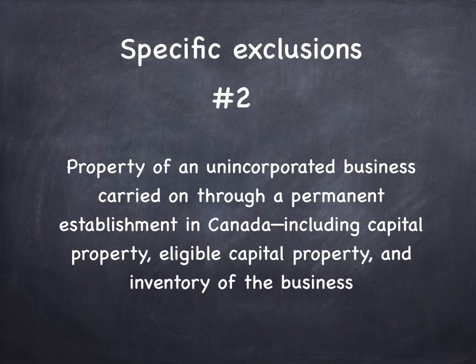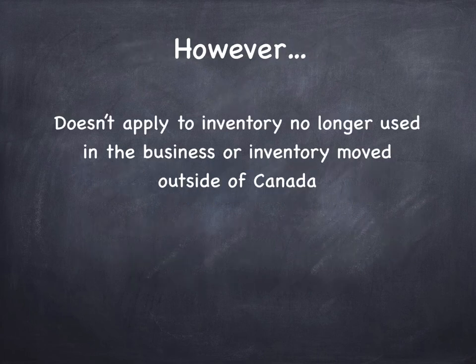Number two: if you run an unincorporated business in Canada, maybe a sole proprietorship carried on through a permanent establishment in Canada, your capital property, eligible capital property, and the inventory of your business will all be excluded. You can't game the system though — the exclusion doesn't apply to inventory you're no longer using in the business or inventory that you moved offshore outside of Canada.